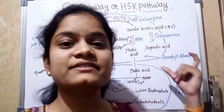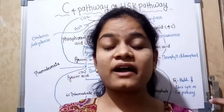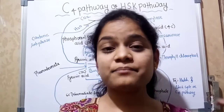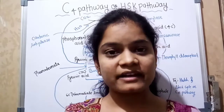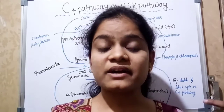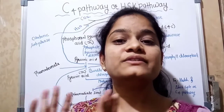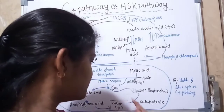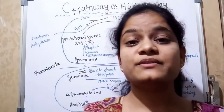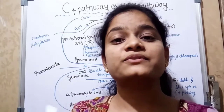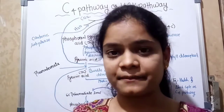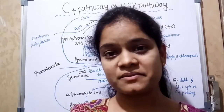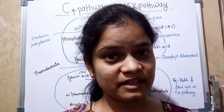C4 plants grow in drought conditions or where nitrogen and CO2 concentration is limited, so these plants risk running photorespiration, which is a waste of energy. That's why C4 plants adapt themselves to avoid the C2 pathway or photorespiration. They do this by increasing the CO2 concentration around the RuBisCO enzyme. Even when temperature is high, if CO2 concentration is also high, the plant runs the normal Calvin cycle rather than photorespiration.